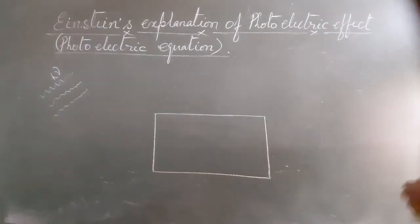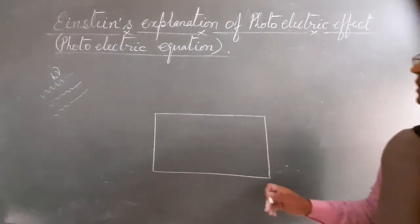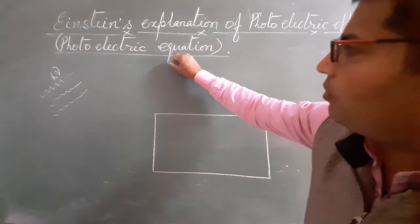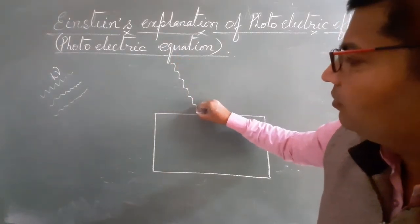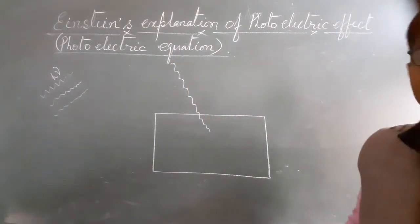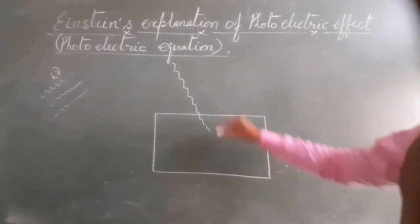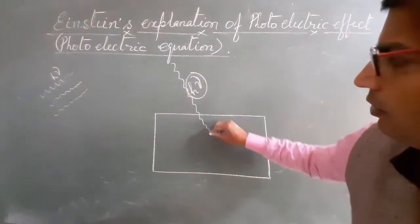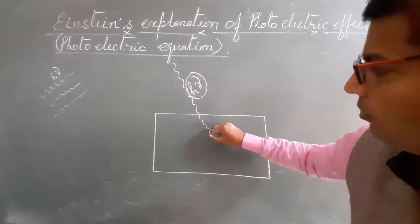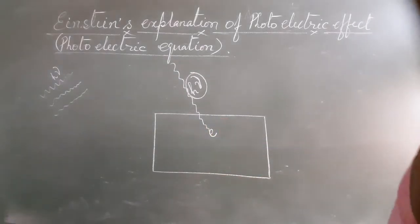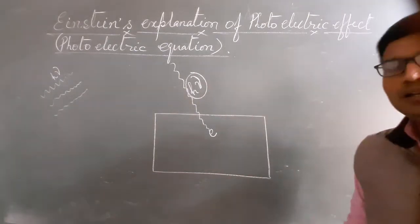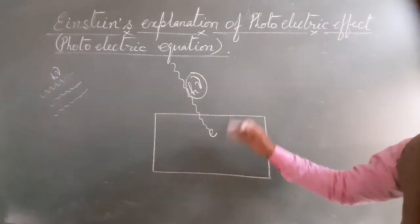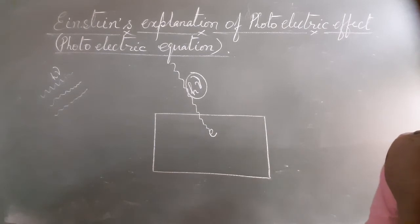Using this, Einstein said when a light photon falls on the metallic surface, then it transfers its whole energy to a single electron. And this energy is used by electron in two parts.